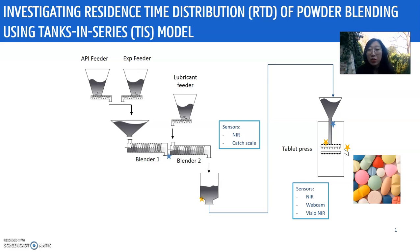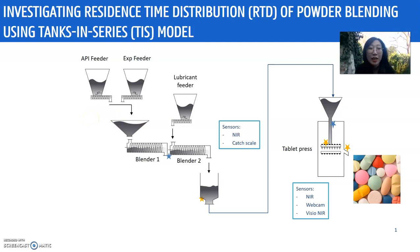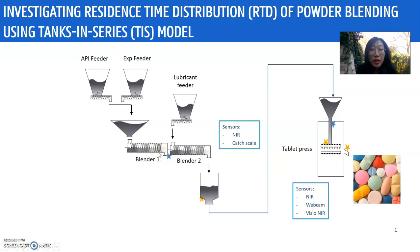This is a typical continuous manufacturing tablet compression line, which consists of several unit operations. First is the feeding part, where the feeder disperses the drugs and other excipients to the blender. The blender ensures that all the drugs are dispersed homogeneously in the material matrix, and then all the materials go to the last unit operation, which is the tablet press.